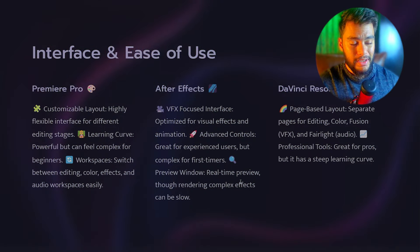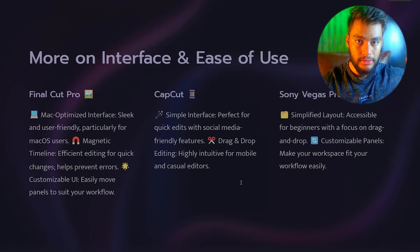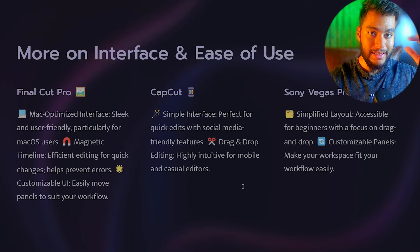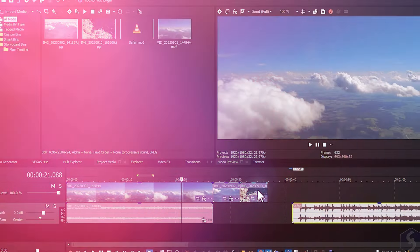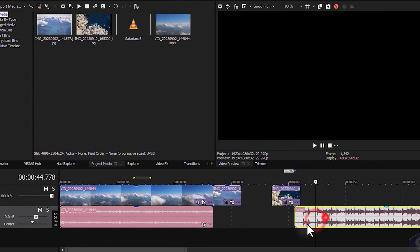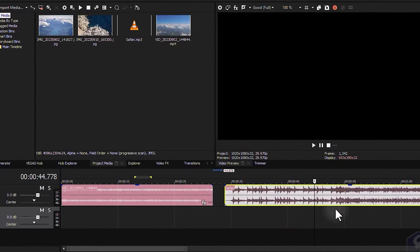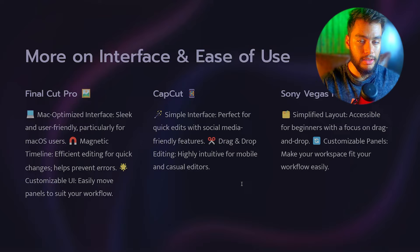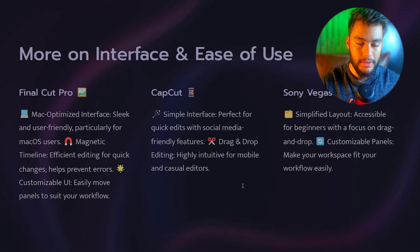Starting off with the interface and ease of use, I'm gonna rank the softwares based on how easy they are to use — number one being the most easiest. Number one: Sony Vegas Pro. The most simplest software to start off with because the interface is really easy to learn. Super beginner friendly. All of the effects and tools are based on drag and drop features.